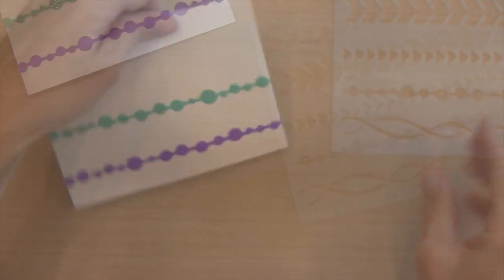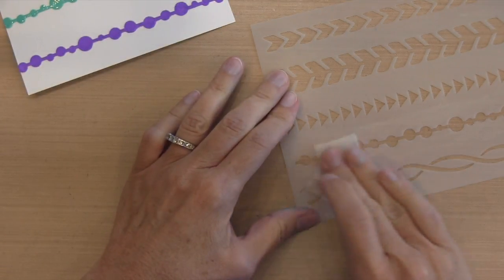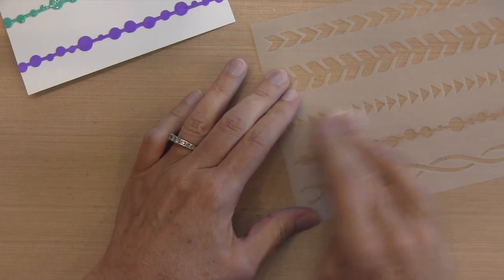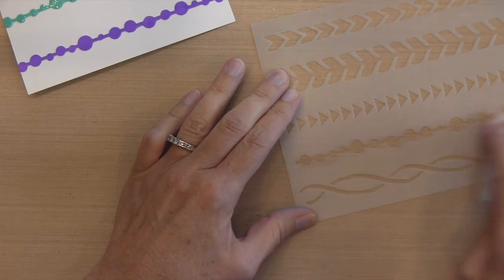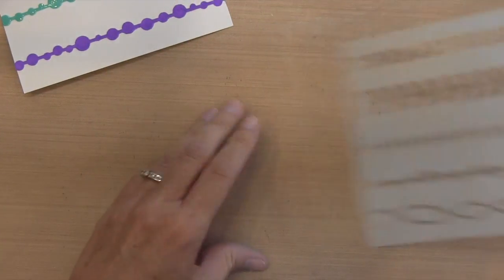I am going to clean my stencil with an alcohol wipe because I know I got some of that VersaMarker on there. Remember I flipped my stencil over when I did that next line of circles. I'm going to clean it off with that alcohol wipe.